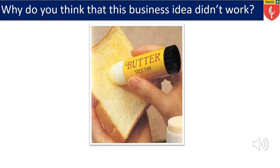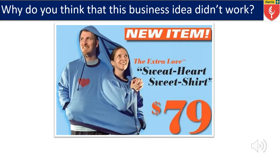Think about why this business idea didn't work. We have butter, but this time it's in a press. It looks as if they are using that thick butter form to butter their bread or perhaps toast. Why do you think that business idea was unsuccessful? And last but not least, we have this sweater — a hoodie called the Extra Love Sweetheart Sweatshirt, and it's $79. Why do you think this business idea didn't work?